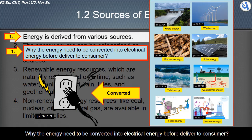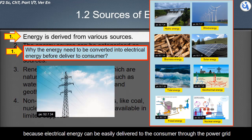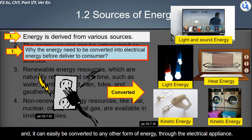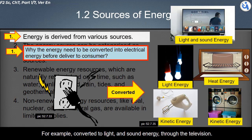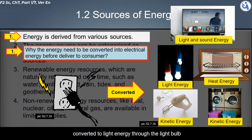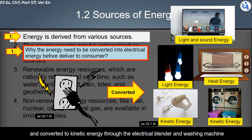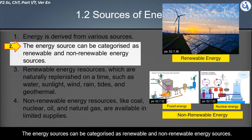Why does energy need to be converted into electrical energy before delivery to consumers? Because electrical energy can be easily delivered through the power grid and easily converted to any other form of energy through electrical appliances — for example, converted to light and sound energy through a television, to light energy through a light bulb, to heat energy through an electrical oven, and to kinetic energy through an electrical blender and washing machine.